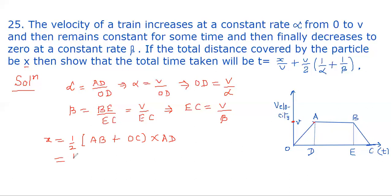AB equals DE, so we write it as (1/2)(DE). And OC can be split, so it can be written as OD + DE + EC, multiplied by AD. This becomes (1/2)(2DE + OD + EC) multiplied by AD.